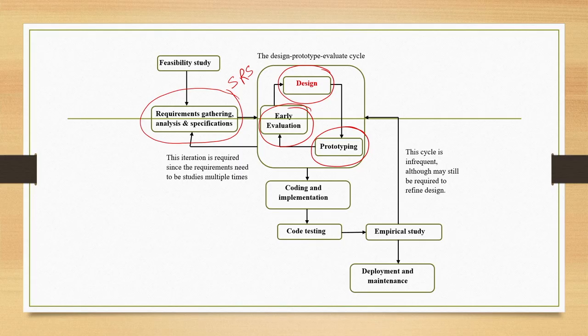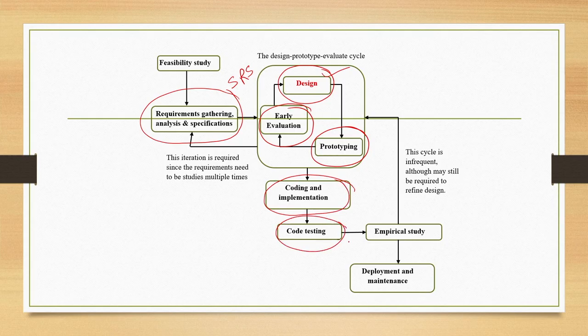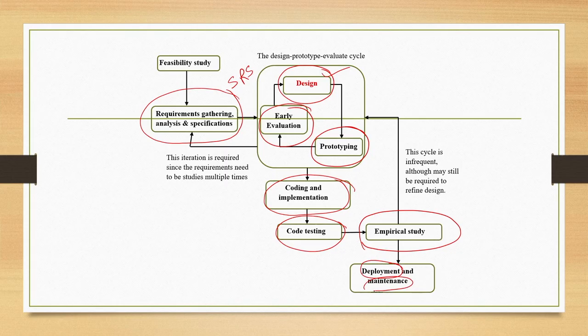In the code design phase, prototype and evaluation is not very important — we concentrate on the design part. Currently we are discussing the design of the code or system. Once that design is done, we go for coding and implementation, followed by testing of the code. Then the whole system is tested for usability with end users, and finally we go for deployment and maintenance stages.